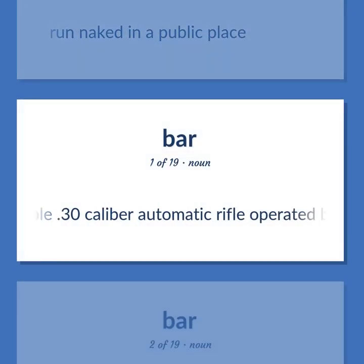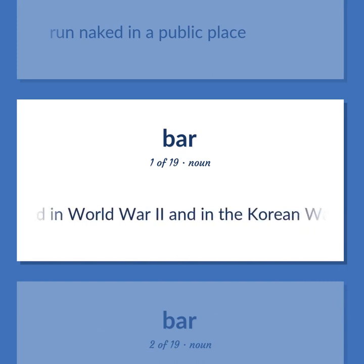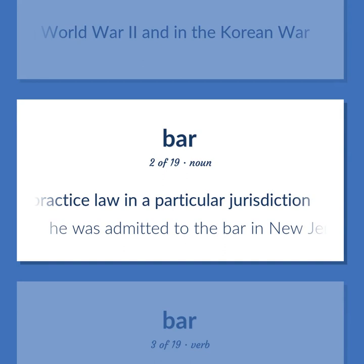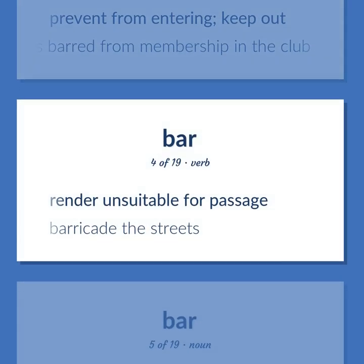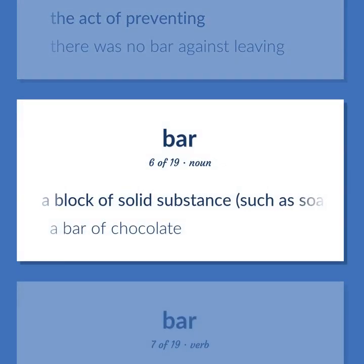Bar: a portable .30 caliber automatic rifle operated by gas pressure and fed by cartridges from a magazine, used by United States troops in World War I, World War II, and the Korean War. The body of individuals qualified to practice law in a particular jurisdiction — 'He was admitted to the bar in New Jersey.' Prevent from entering; keep out — 'He was barred from membership in the club.' Render unsuitable for passage — barricade the streets. The act of preventing — 'There was no bar against leaving.' A block of solid substance, such as soap or wax — a bar of chocolate.